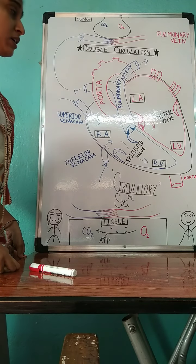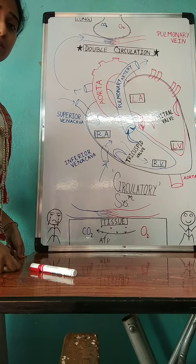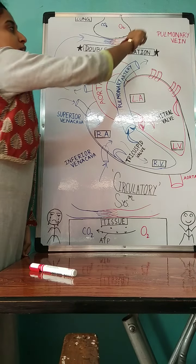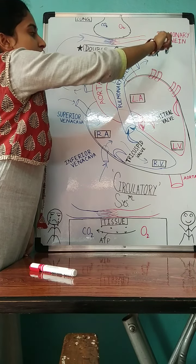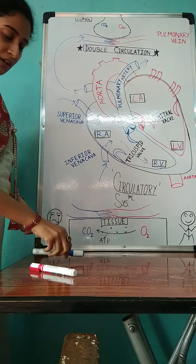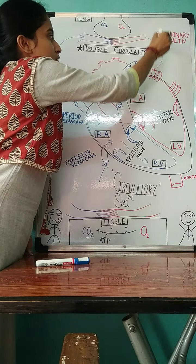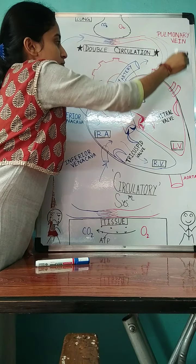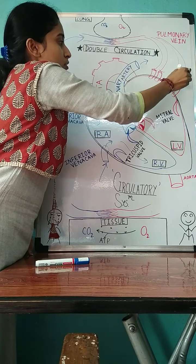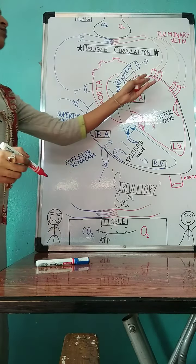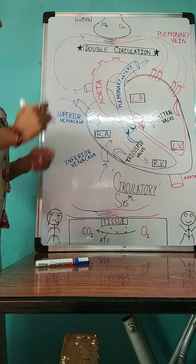Now it is required to spread all over the body. So this oxygenated blood comes to the left atrium via pulmonary vein, two pulmonary veins from each lung.